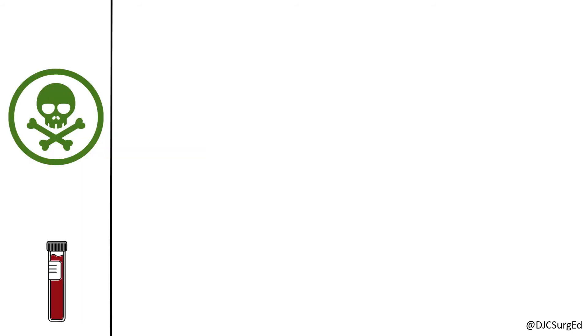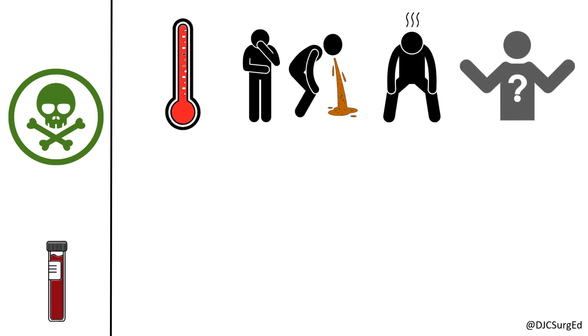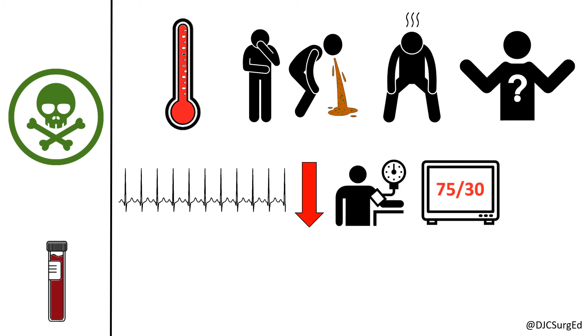Most patients quickly develop signs of systemic toxicity, including high fever, nausea, vomiting, malaise, altered mental status, tachycardia with associated hypotension, and oliguric renal failure.